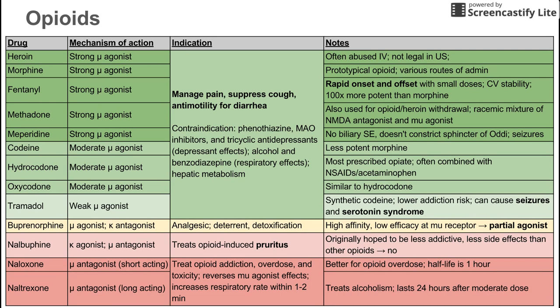Naltrexone is the last one on the list and is also a mu antagonist, but long-acting. It's better suited for alcoholism and lasts longer after a moderate dose. Both naloxone and naltrexone are not used for pain management — they're mostly used for opioid addiction, overdose, and toxicity.